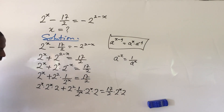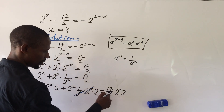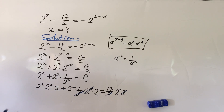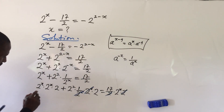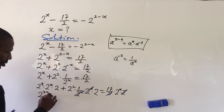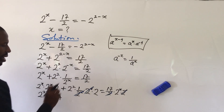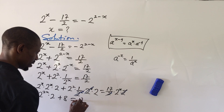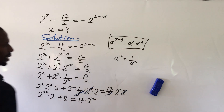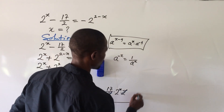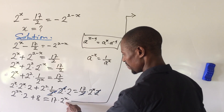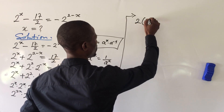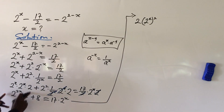Now we simplify. The 2^x terms cancel appropriately. 2^x times 2^x gives 2^(2x), and we have a factor of 2 remaining. On the other side, 2 squared gives 4 and 4 times 2 gives 8. So the equation simplifies to: 2 times 2^(2x) plus 8 equals 17 times 2^x. We can separate 2^(2x) as (2^x)^2, giving us 2 times (2^x)^2.